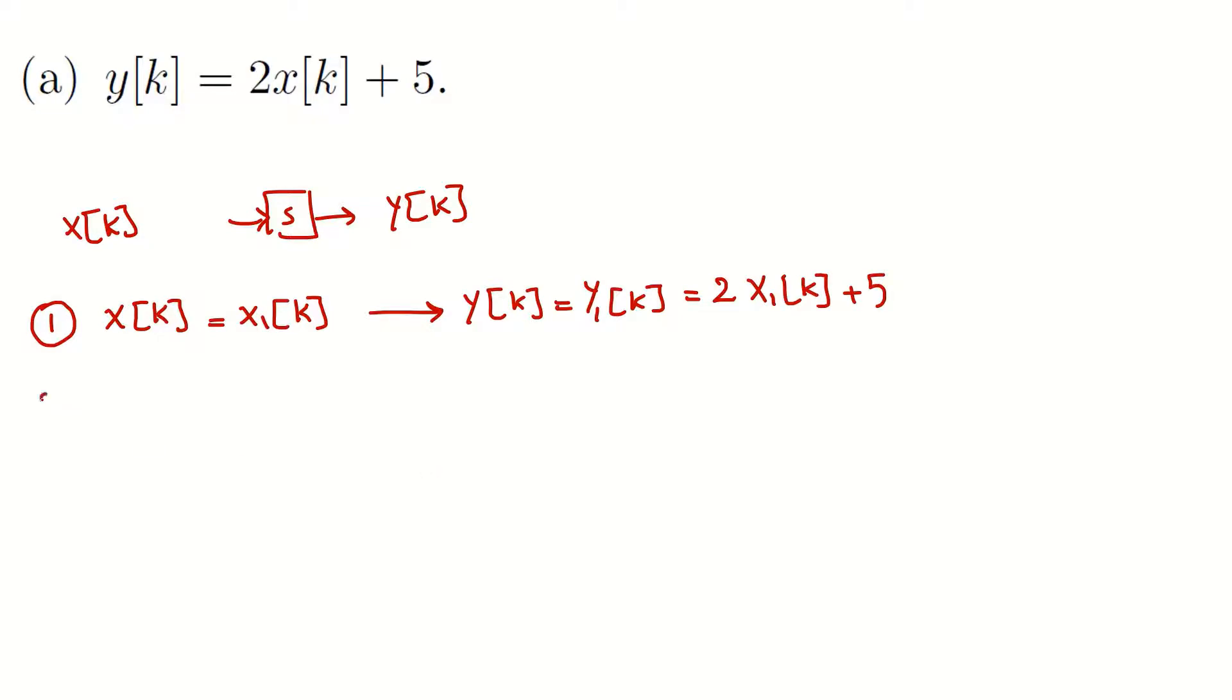I give another input x2k. I assume the input is a different signal, it's x2k. And for this input, the output yk becomes y2k which is 2 times input plus 5.